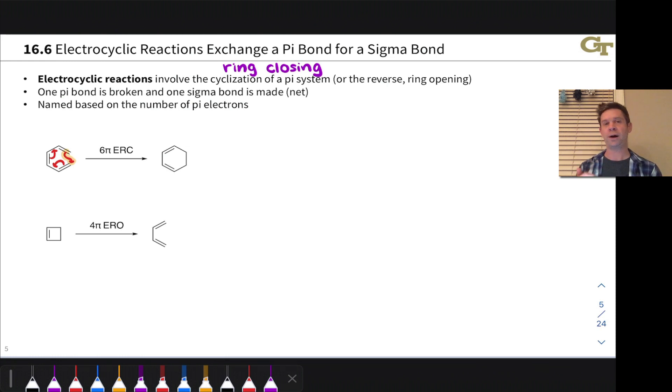At the bottom here, we have a four-pi situation because there are four electrons shifting around and the one that breaks the sigma bond to open the ring is really this arrow highlighted in orange right here. This is a four-pi electrocyclic ring opening.